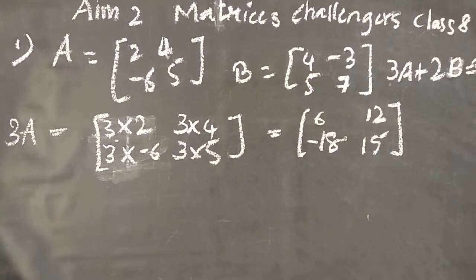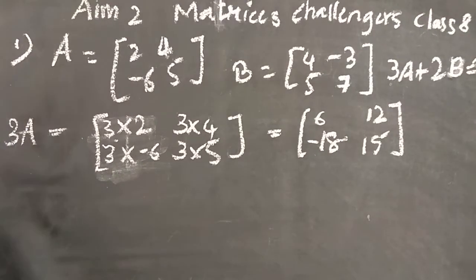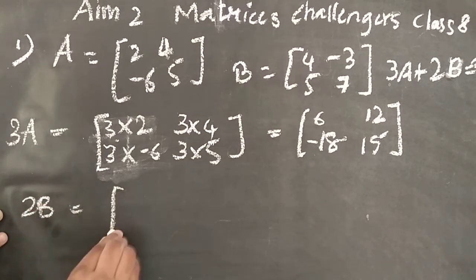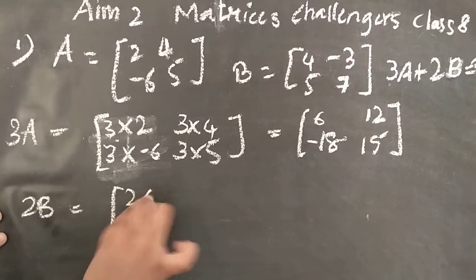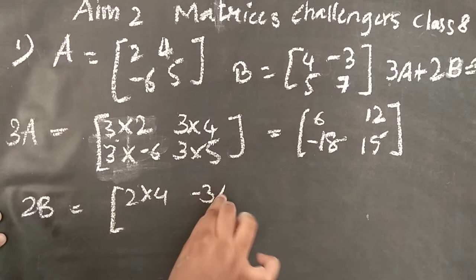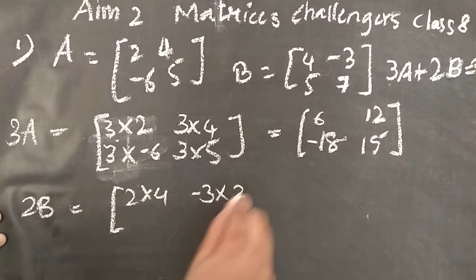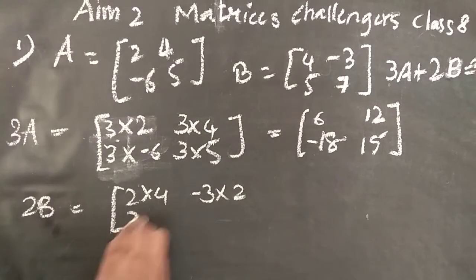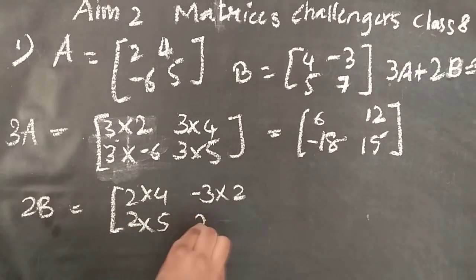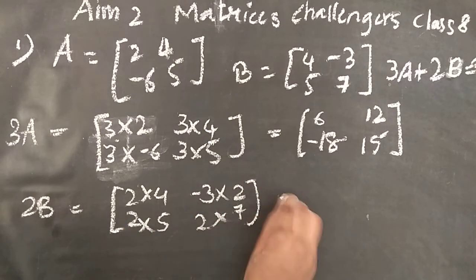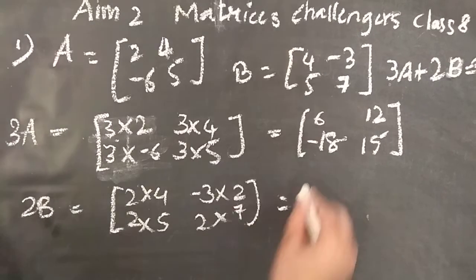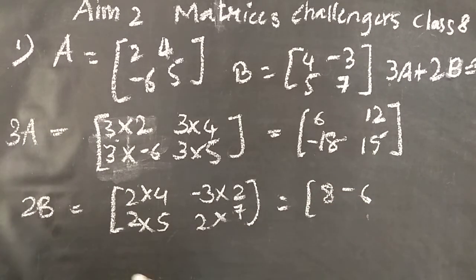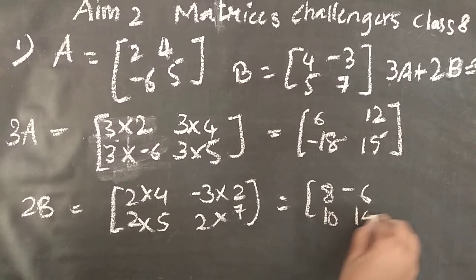So we have found 3A. Now 2B is: 2 into 4, 2 into minus 3, 2 into 5, 2 into 7. That gives us 8, minus 6, 10, and 14.